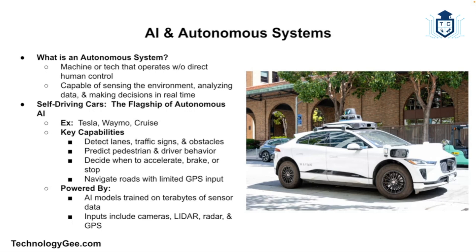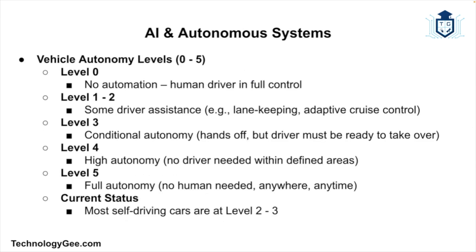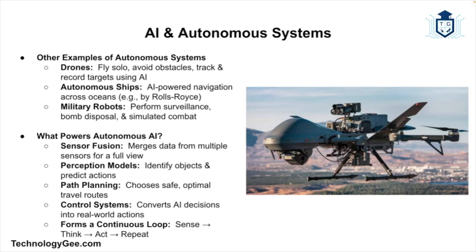All of this happens in real time thanks to AI algorithms trained on terabytes of sensor data from cameras, LiDAR, radar, and GPS systems. Autonomous systems are often ranked on a scale from zero to five. Most self-driving cars today are stuck somewhere between levels two and three. A true autonomous system — level five — we're not quite there yet.